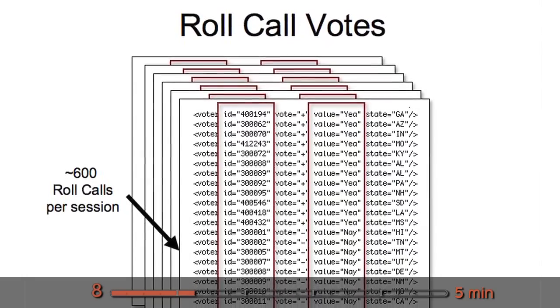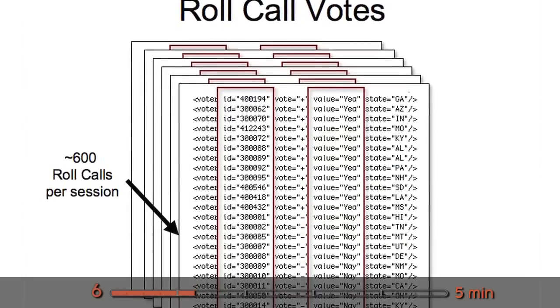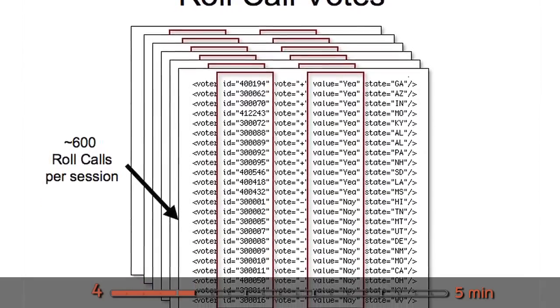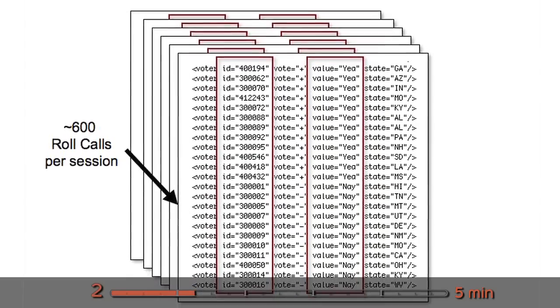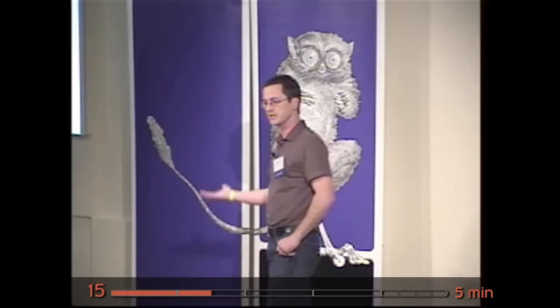Then you can go through and get what are called roll call votes. What that does is just say when each vote comes up, did the senator vote yea or did they vote nay? And you compile all those over the course of 600 Senate votes that happen over the course of a legislative session.